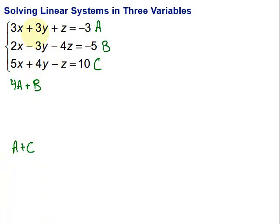Let's go ahead and execute the plan. This first one said four times A. So here's my equation A. I'm going to multiply through everything by four. Four times three x gives me 12x plus four times three y is 12y and then plus four z. And then finally, four times the negative three is negative 12. Make sure you multiply that by every single term in that equation. Then I'm going to add to it equation B, and I don't have to do anything with equation B. I'm just going to go ahead and bring it down here. So minus three y minus four z, and that's equal to negative five.